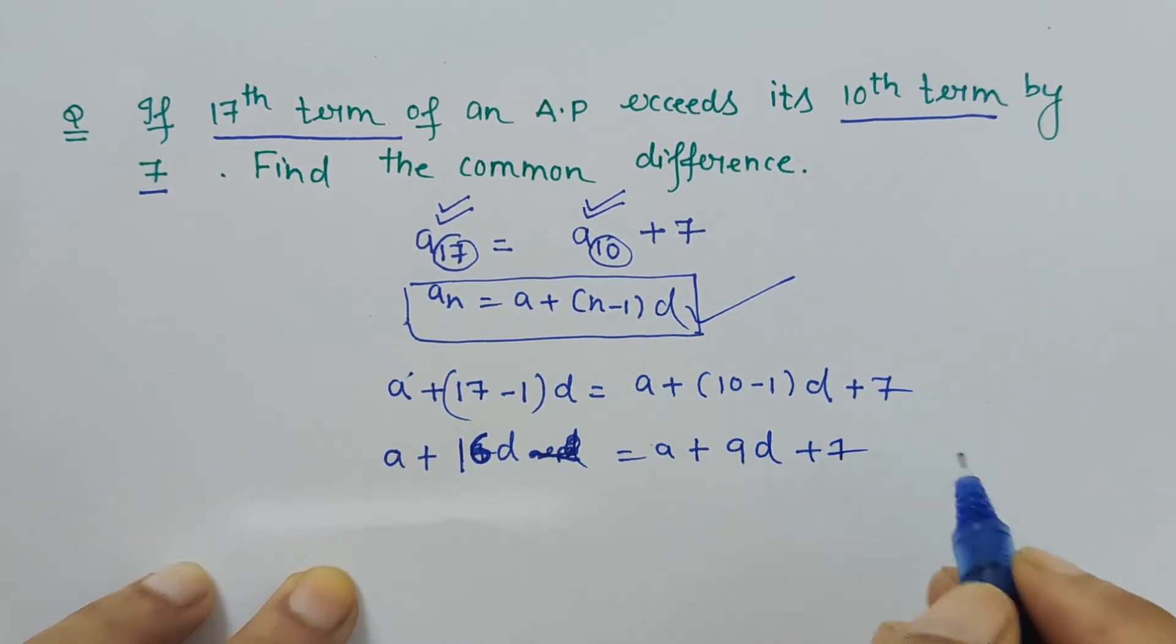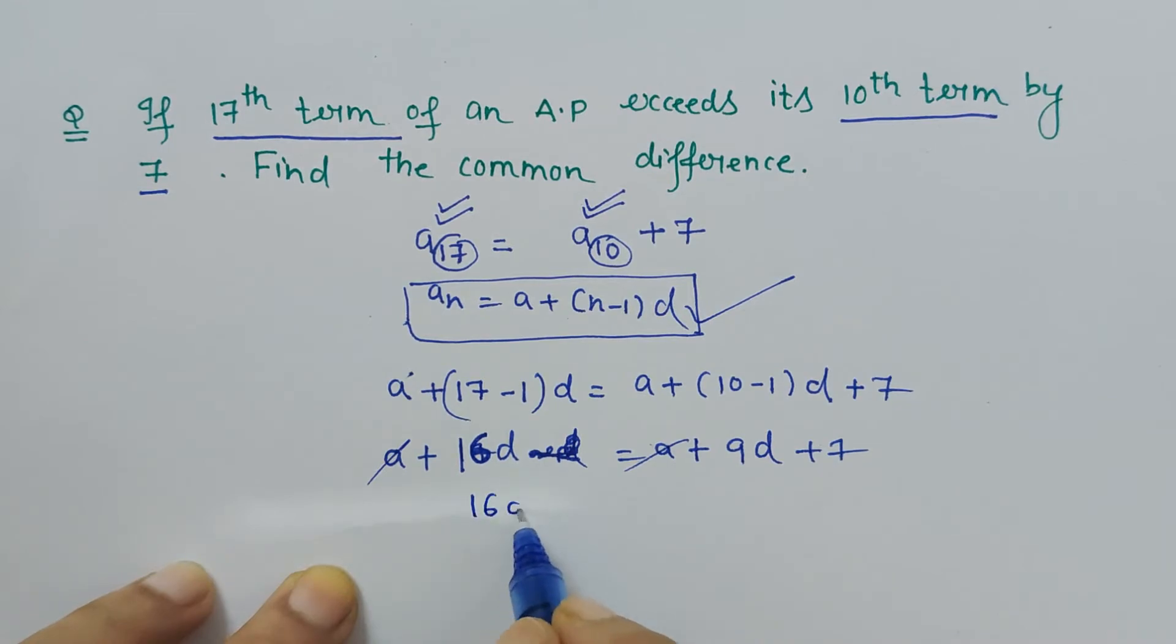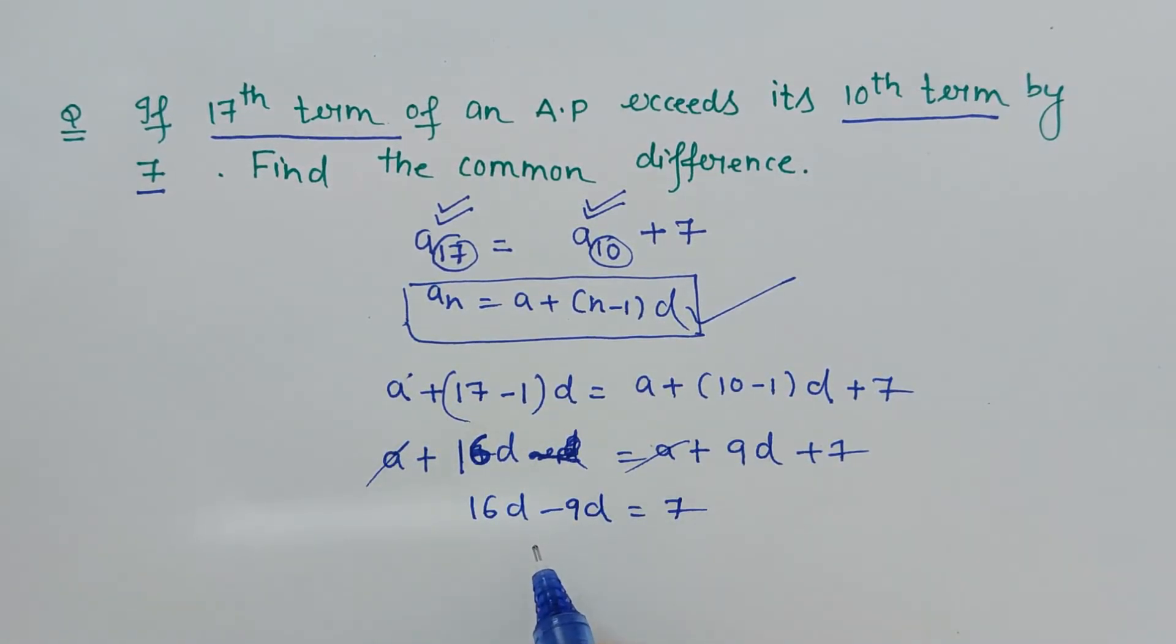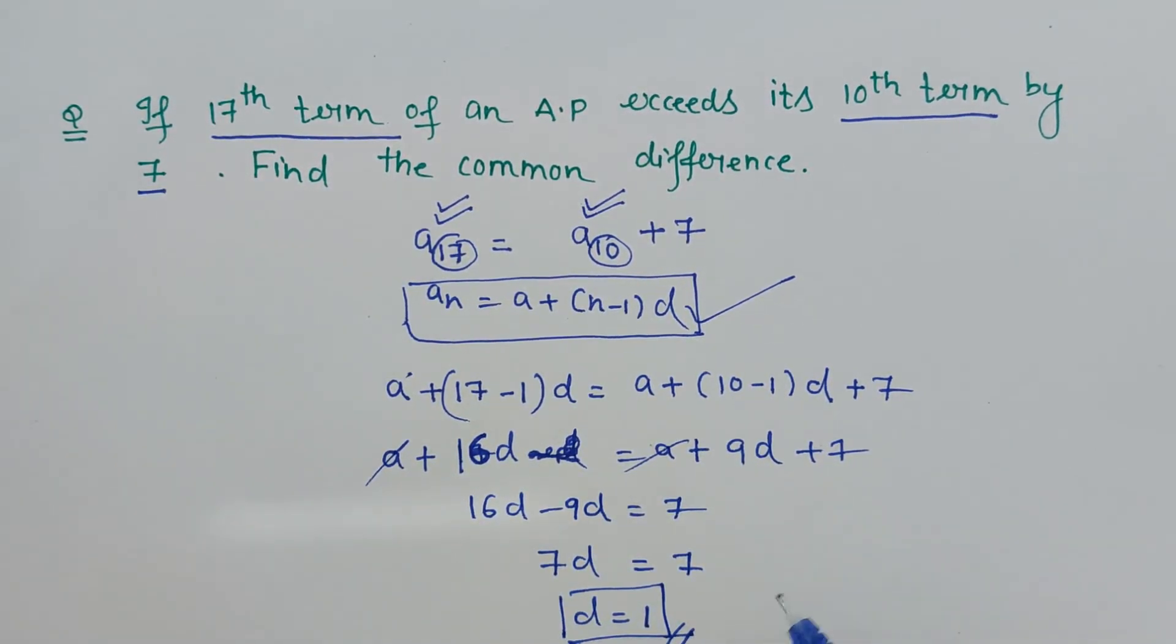When a gets on the left hand side, a minus a gets cancelled. 16d minus 9d is equal to 7. So 16d minus 9d, how much is it? 7d is equal to 7, so d is equal to 1. So the common difference is 1 here, and this is what we had to calculate.